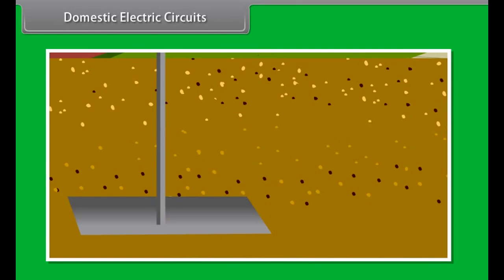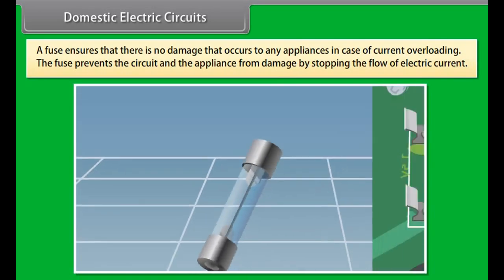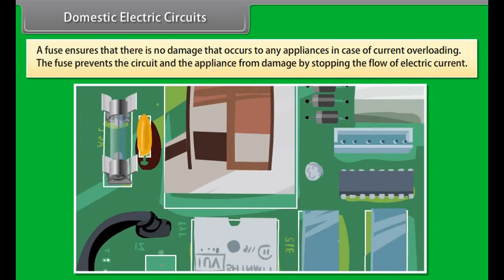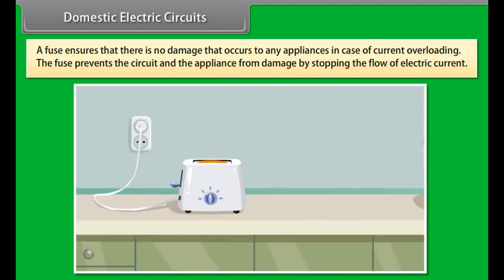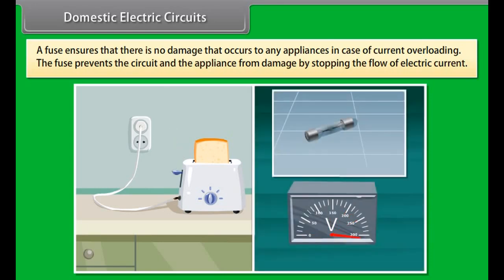The electric power line enters our house through three wires: the live wire (red wire), the neutral wire (black wire) and the earth wire (green plastic insulation). The live wire has a high potential of 220 volts and the neutral wire has zero potential. Thus the potential difference between the live wire and the neutral wire is 220 minus 0 which equals 220 volts.